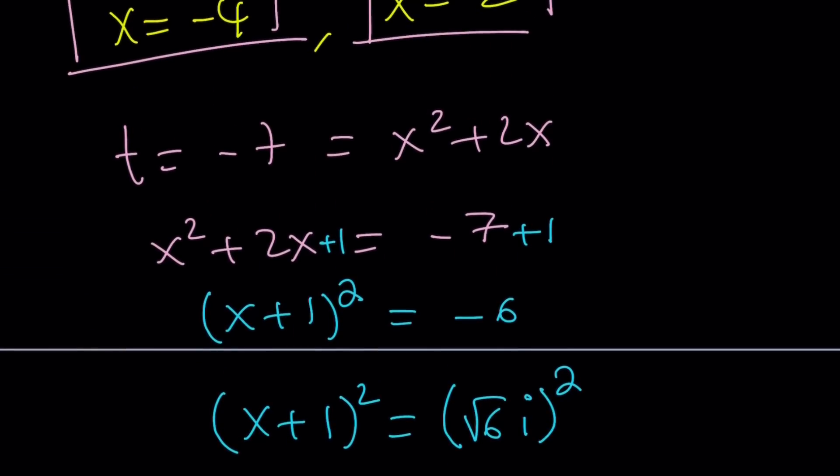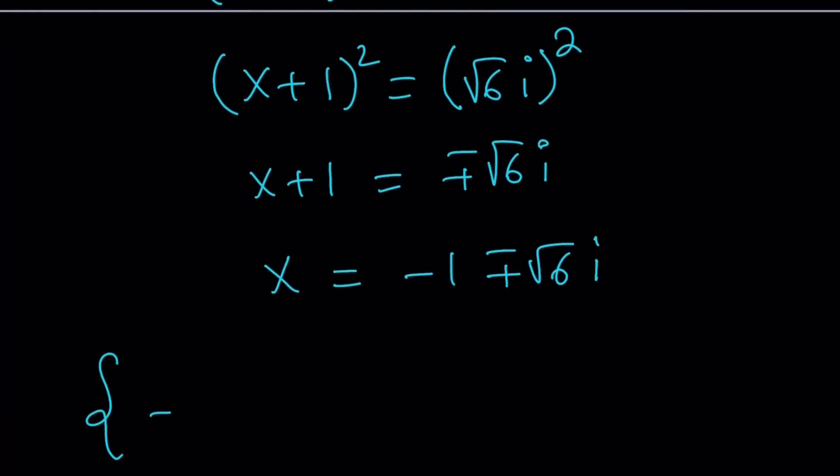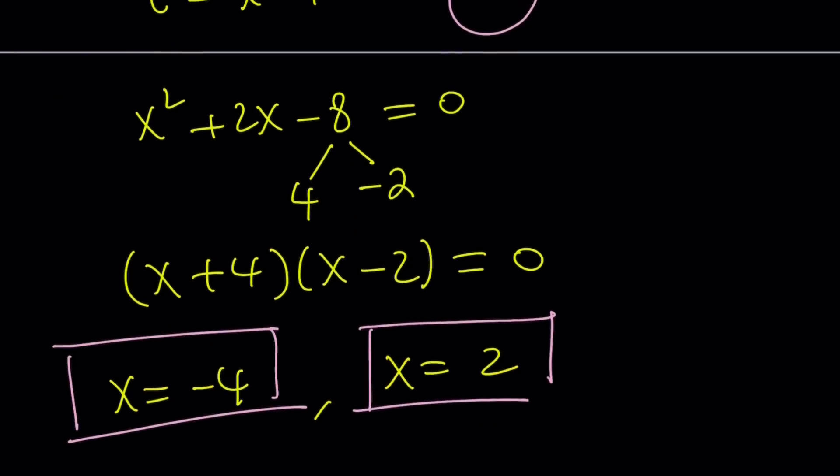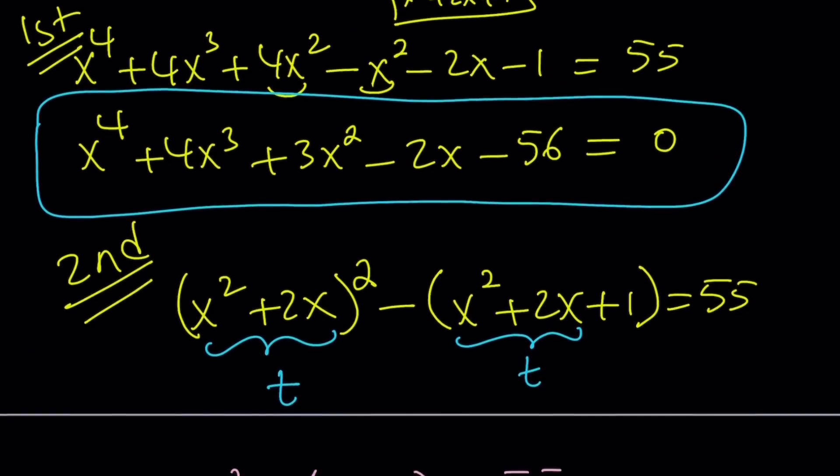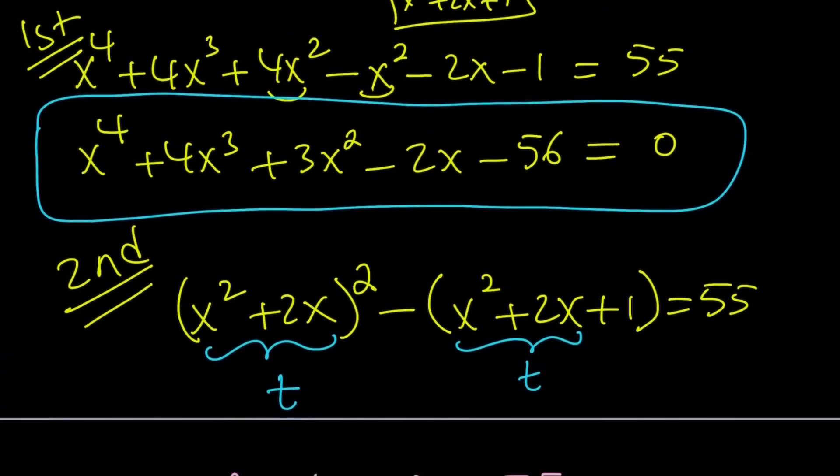In total, we got four solutions. Let's go ahead and write them down. -4, 2, -1 + √6i, and -1 - √6i. And since we had a quartic to begin with, it makes sense to have four solutions.